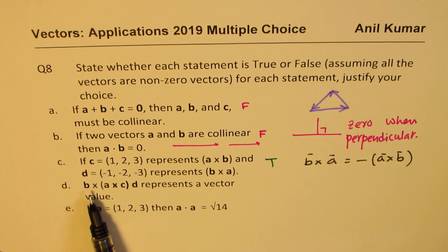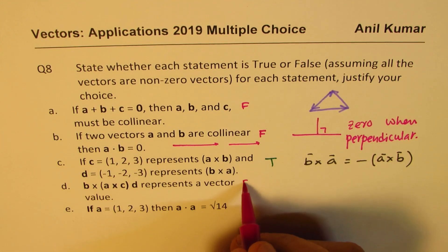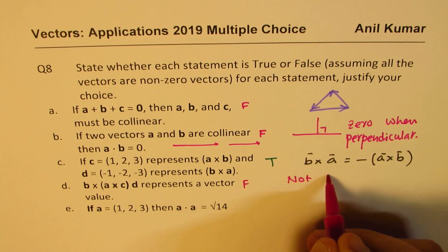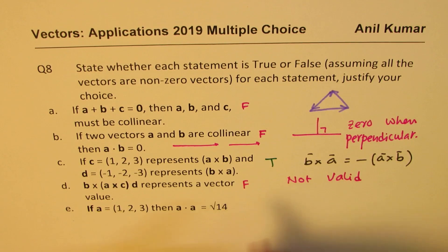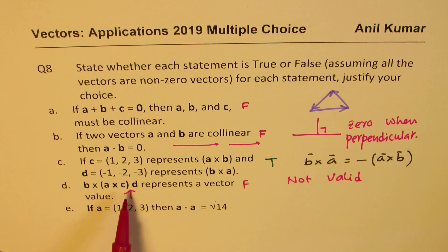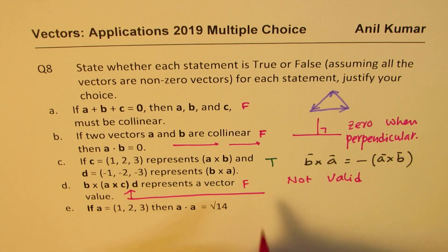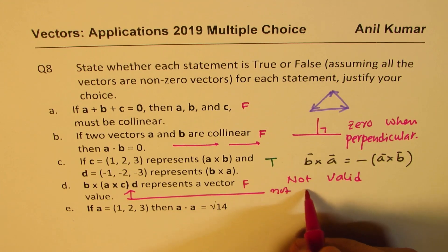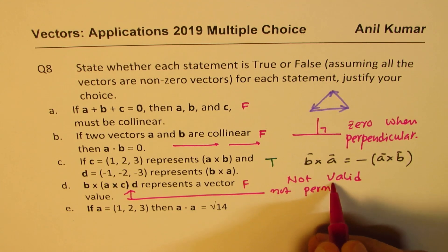Now we have b×a×c. There is nothing in between. It represents a vector value. Well, this is not valid. False. It is not valid. Since we don't have a dot or a cross product. And this D could have been a scalar. So you cannot just multiply like this with a vector. So it is not permitted.